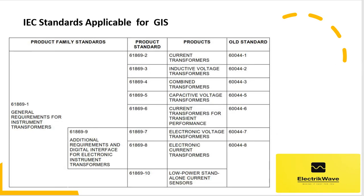For general requirements for instrument transformers, refer to IEC 61869-1. For additional requirements and digital interface for electronic instrument transformers, refer to IEC 61869-9. Old standard and new standard are tabulated as shown here.